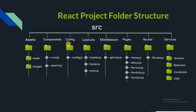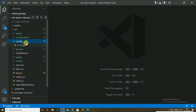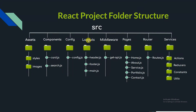The config folder contains the configuration file. We store environment variables in this config.js file. So this is the configuration file where we keep the config.js file containing environment variables.